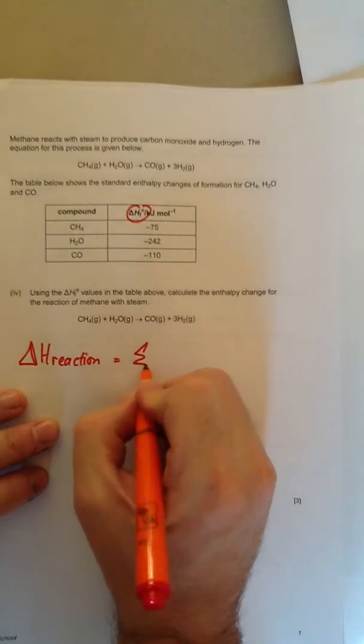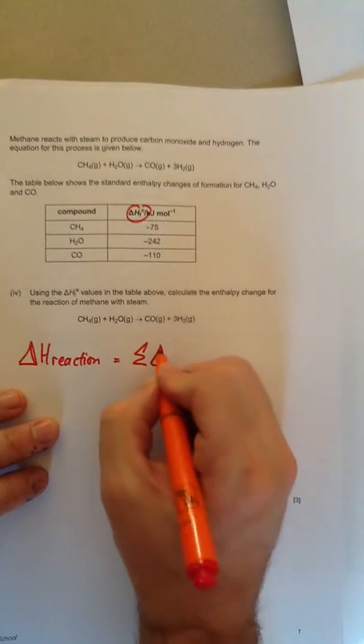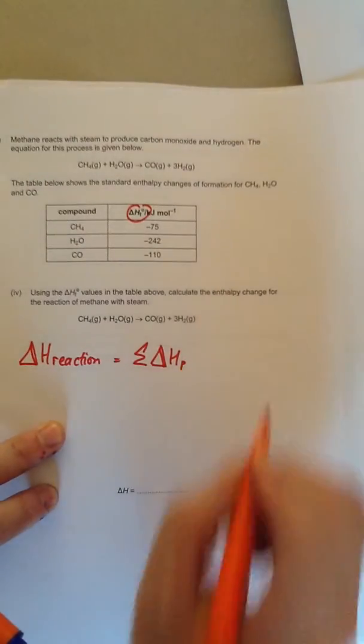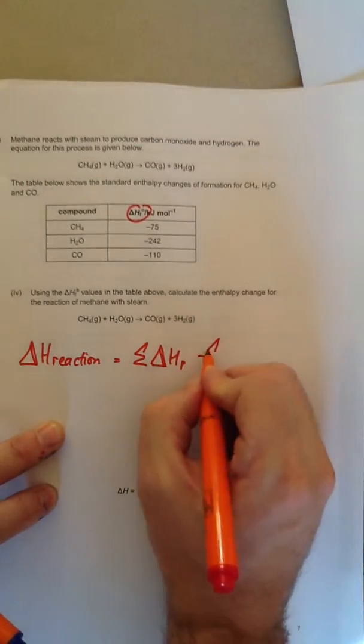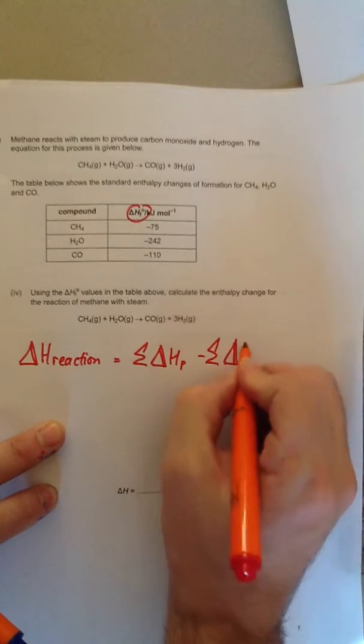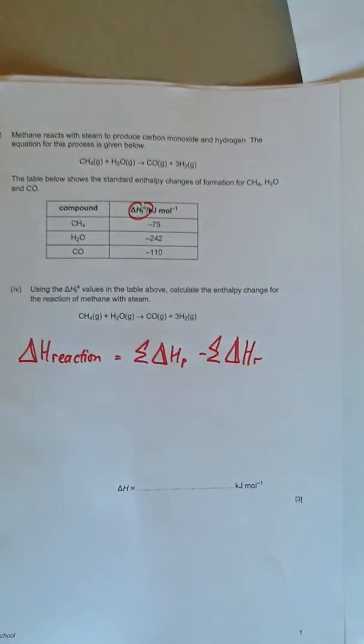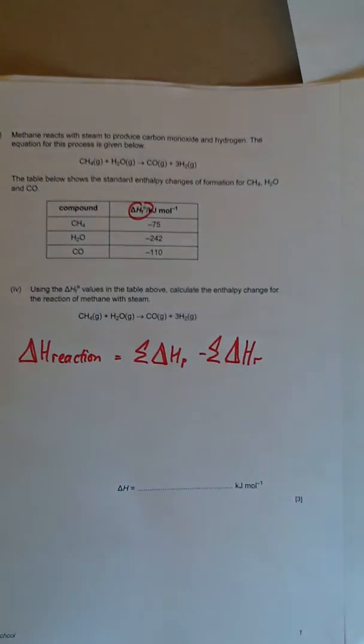...is the sum, that just means the sum, of all the enthalpies of the products, delta H P I'll call it, minus the sum of all the enthalpies of the reactants. Products minus reactants. If you're given delta H naught F, it is products minus reactants.